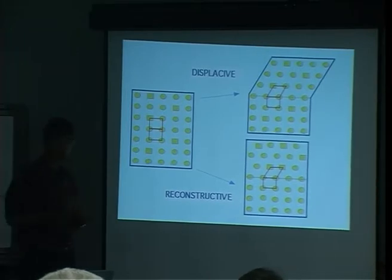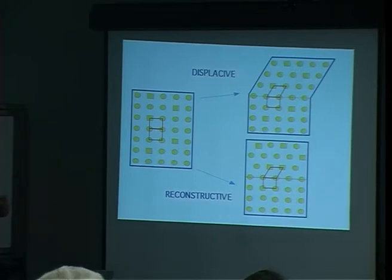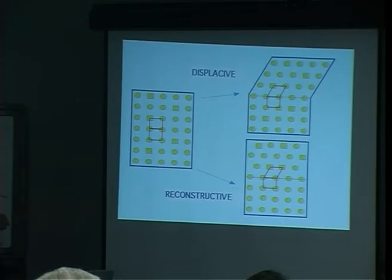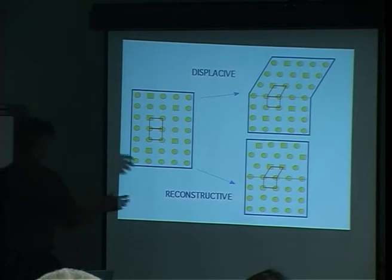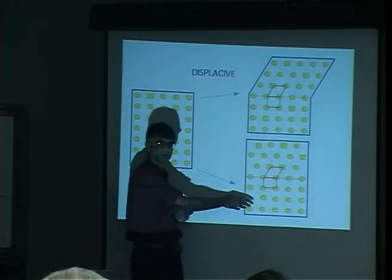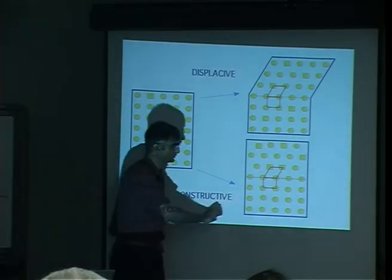So far we've talked about martensitic transformations and bainite where nothing diffuses — these are displacive. Whereas pearlite and ferrite forming at high temperature are reconstructive transformations, which I haven't covered yet but will do tomorrow.